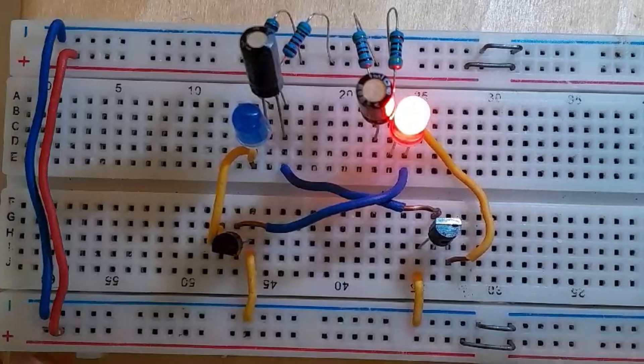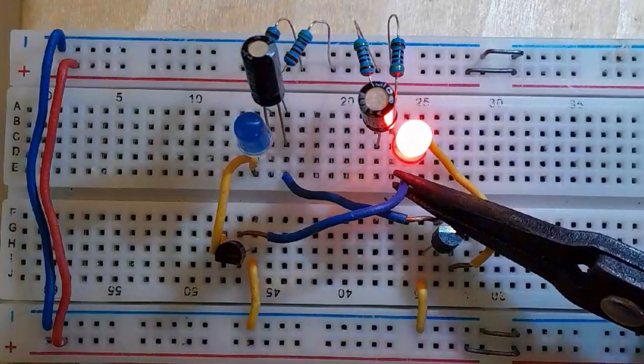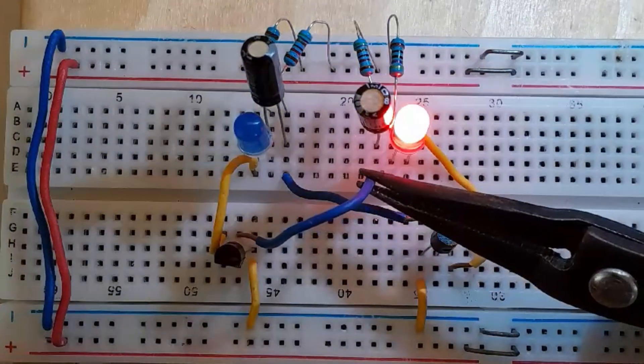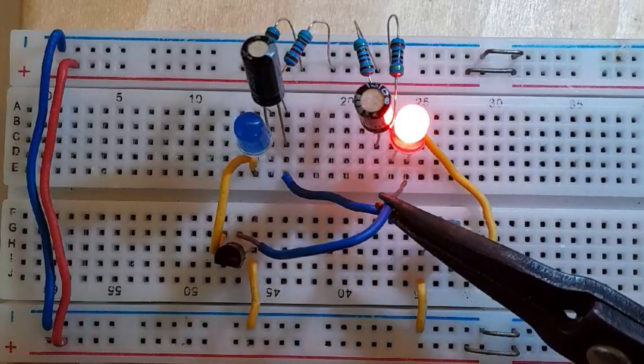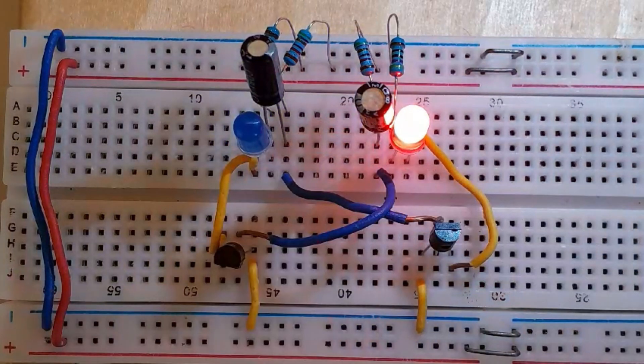So I found the mistake. You need to remove this wire and place it on the negative side of the capacitor, so right here instead of here. You need to place it here, and it should start blinking.